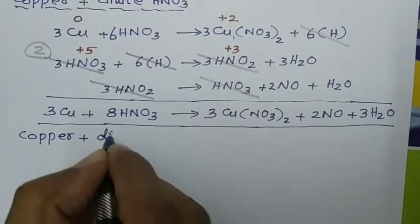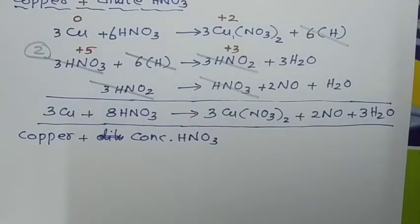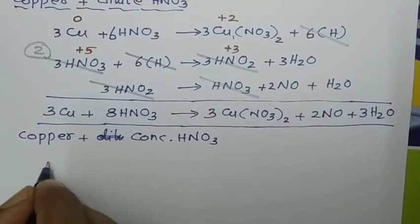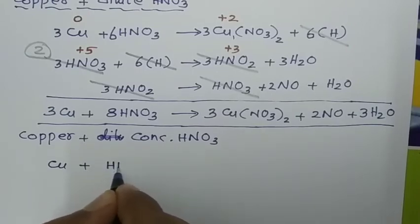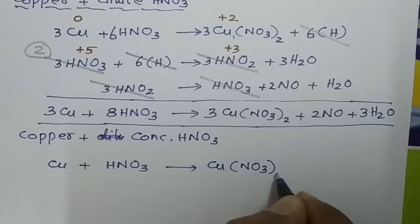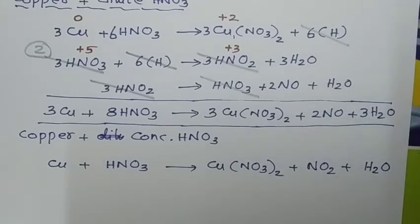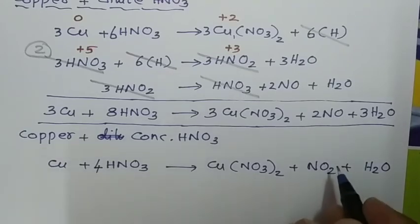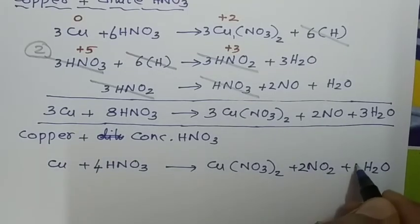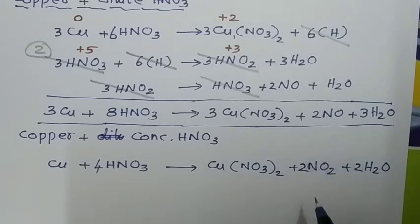When metals undergo reaction with concentrated nitric acid, they liberate nitrogen dioxide (NO₂). Copper undergoes oxidation by concentrated nitric acid to give the same product — copper nitrate (cupric nitrate) — plus nitrogen dioxide plus H₂O. Balancing: 2 + 1 = 3 nitrogen, so the nearest even number gives 4 nitrogen and 4 hydrogen. The key difference: with dilute nitric acid, NO is liberated; with concentrated nitric acid, NO₂ is liberated.